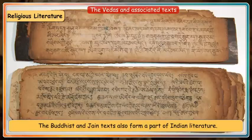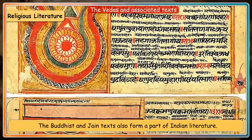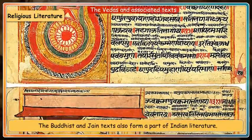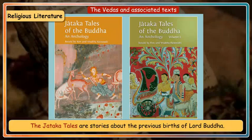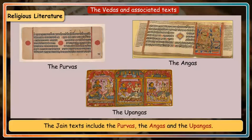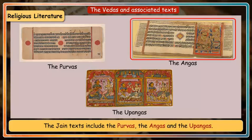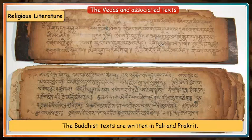The Buddhist and Jain texts also form a part of Indian literature. The Jataka tales are stories about the previous births of Lord Buddha. The Jain texts include the Purvas, the Angas and the Upangas. The Buddhist texts are written in Pali and Prakrit.